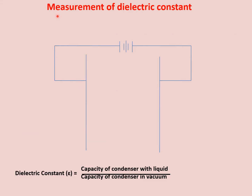Next is the measurement of dielectric constant. For this, we use the parallel plate condenser. The formula used is: dielectric constant (represented by epsilon) is equal to the capacity of condenser with liquid upon the capacity of condenser in vacuum.